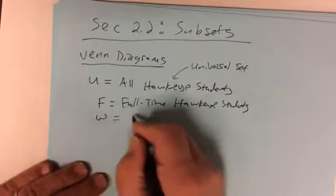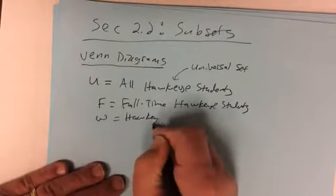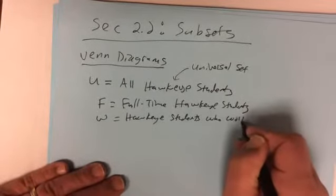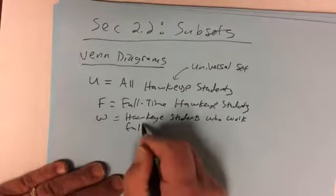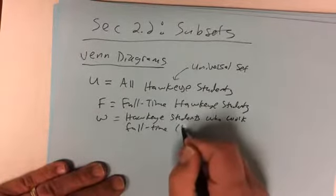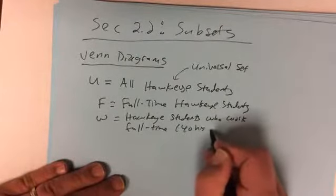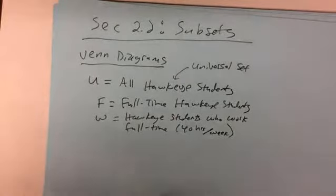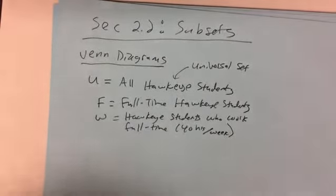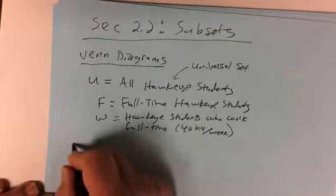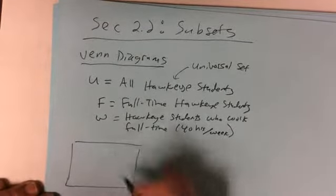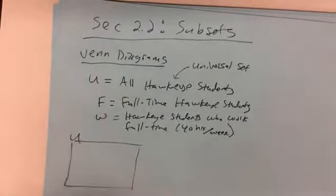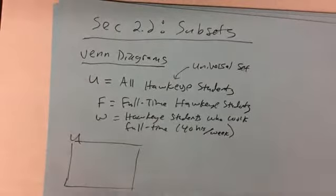Within that universal set, let set F be full-time Hawkeye students, and let set W be Hawkeye students who work full-time — 40 hours or more per week. So we have these two sets, and the universal set is all Hawkeye students.